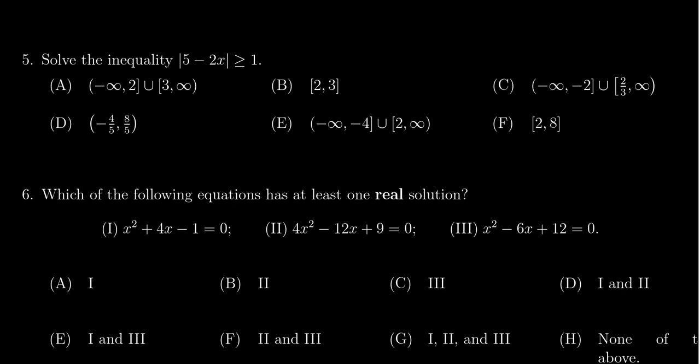There's the positive case where 5 - 2x is greater than or equal to 1. Or there's the negative case where 5 - 2x is less than or equal to -1. We do have to flip the sign in the negative case like so.